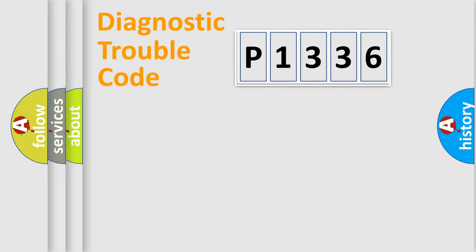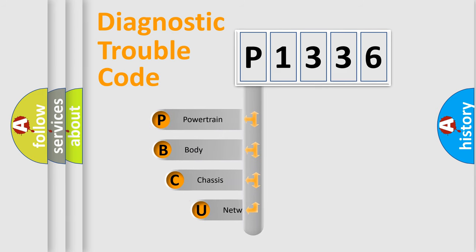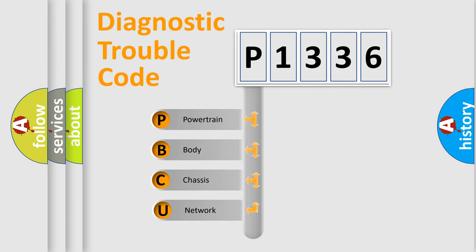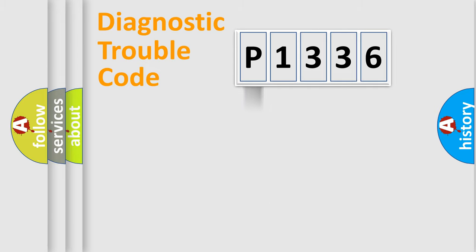Let's do this. First, let's look at the history of diagnostic fault code composition according to the OBD2 protocol, which is unified for all automakers since 2000. We divide the electric system of an automobile into four basic units: Powertrain, Body, Chassis, and Network.